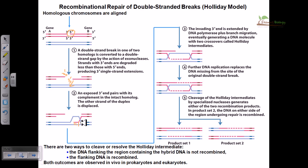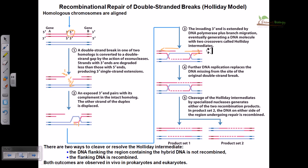The invading three prime end is extended by DNA polymerase and branch migration occurs. For this to occur, we must have access to the RecBCD proteins. RecBCD proteins will come and help the branch migration process, with migration going on in both directions.